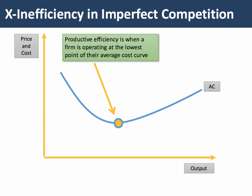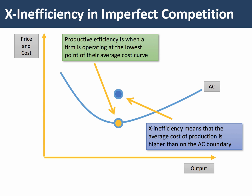Some economists go further and argue there will be x-inefficiency in monopoly markets. Productive efficiency means reaching the lowest feasible point on your unit cost curve, but a lack of intense day-to-day competition can lead to x-inefficiency. Costs — particularly fixed costs like salaries, pensions, and travel expense accounts — may rise. X-inefficiency means the actual unit cost is higher than it would be on the true average cost boundary.